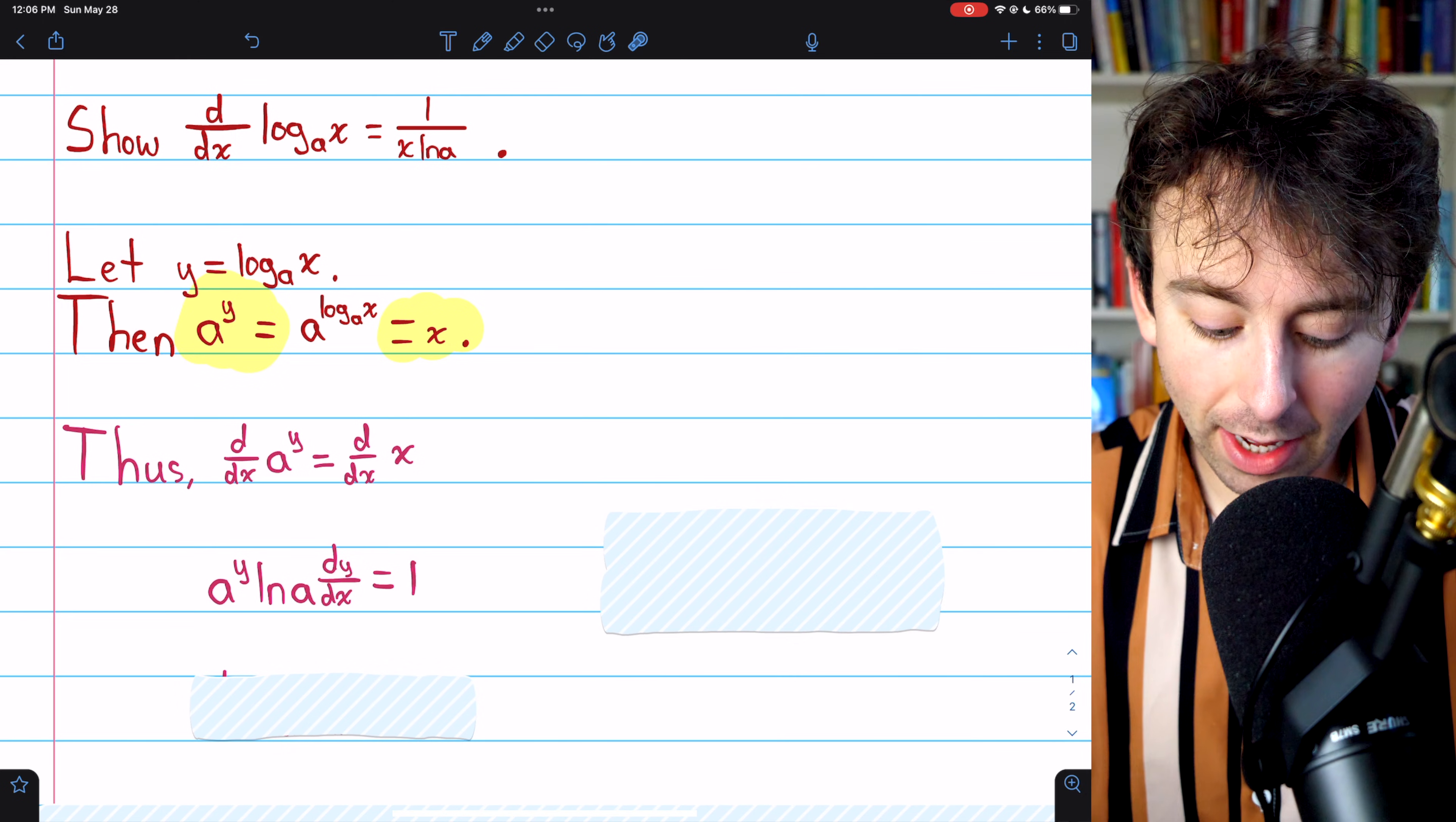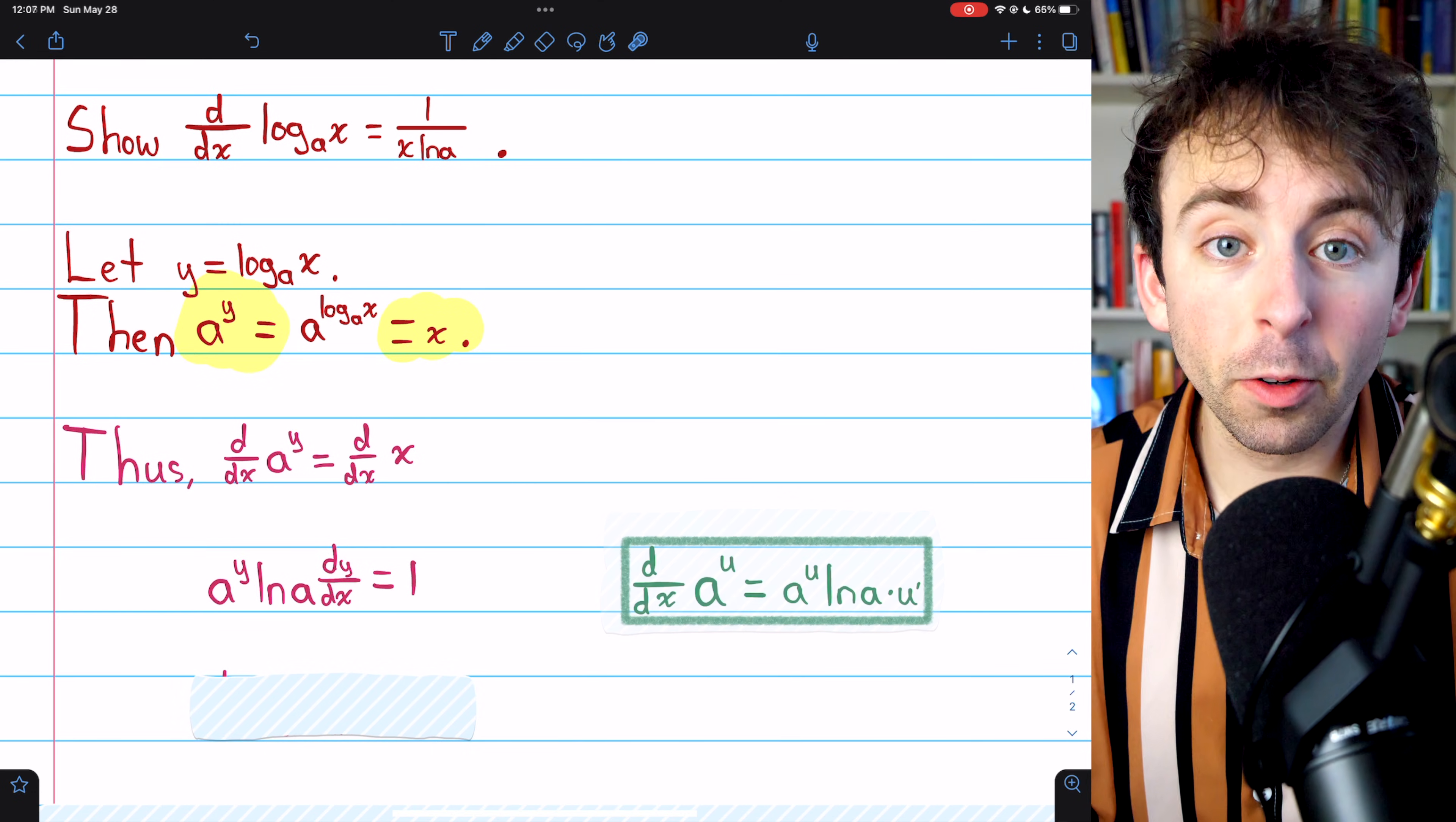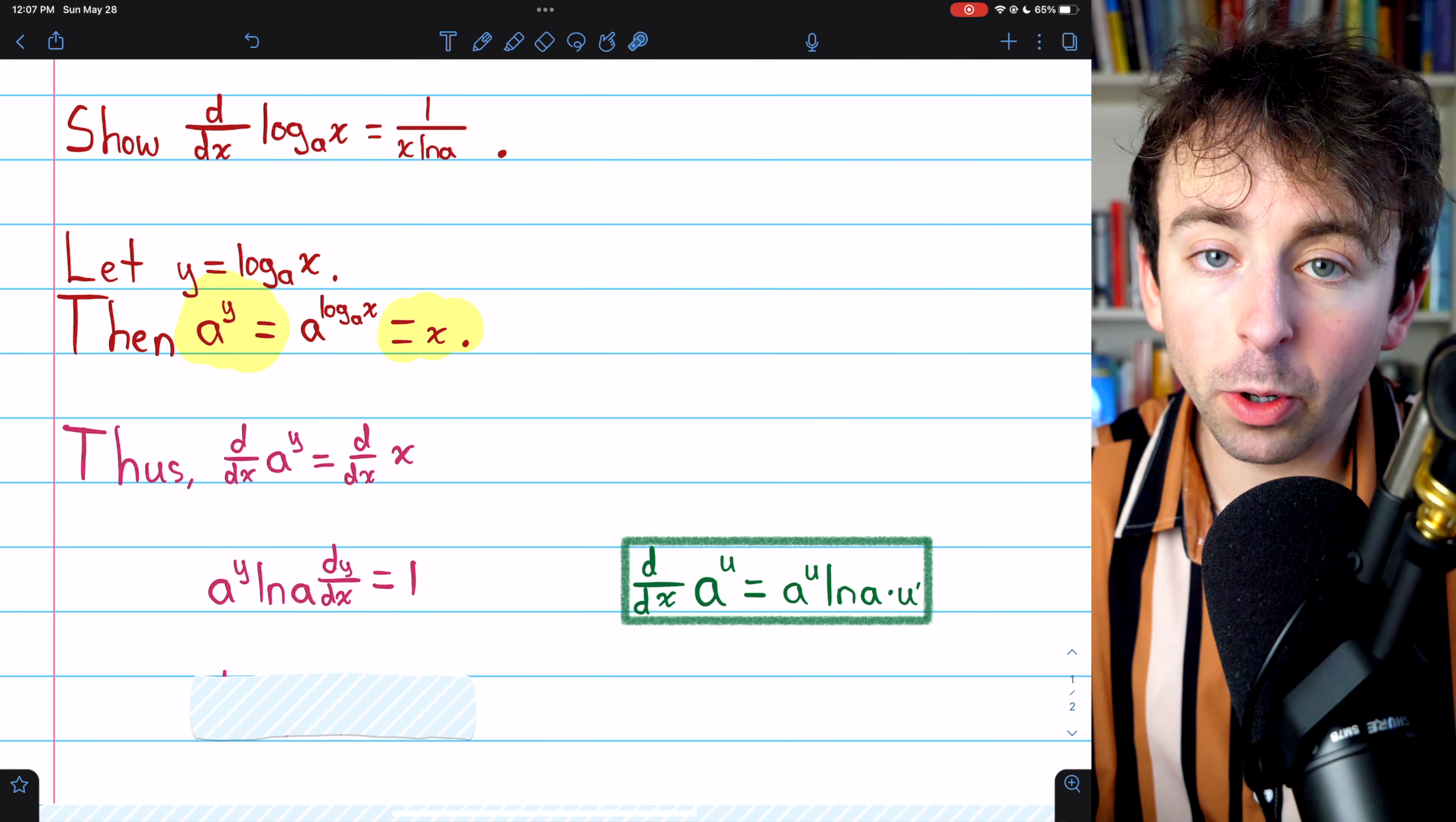But because y is itself a function, we also need to use the chain rule and multiply by the derivative of y with respect to x. Here is the formula we just used written out where u is taken to be a function of x.